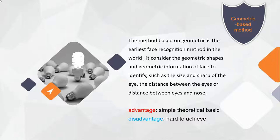The geometric-based method is the earliest face recognition method. It uses the geometric shape and geometric information of the face to identify individuals, such as the size and shape of the eyes, the distance between the eyes, or the distance between the eyes and nose. The advantage is its simple theoretical basis, but the disadvantage is that it is hard to achieve, because features like eye shape are difficult to classify and the differences between individuals are hard to detect.